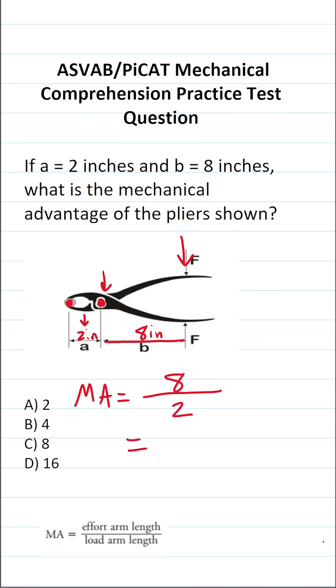Therefore, the mechanical advantage of this set of pliers is 8 divided by 2, or 4. So this one is going to be B.